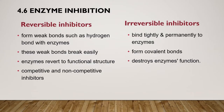Certain chemicals selectively inhibit the action of specific enzymes. Most enzymes are inhibited or even destroyed by certain chemical agents. Enzyme inhibition can be either reversible or irreversible. For reversible inhibitors, they form weak chemical bonds such as hydrogen bonds with the enzyme, and these weak bonds break easily. After that, the enzyme reverts to its functional structure. These reversible inhibitors can be either competitive or non-competitive.